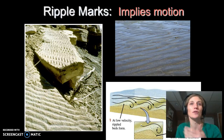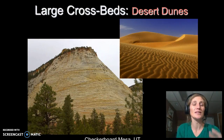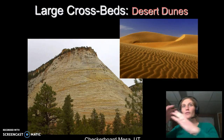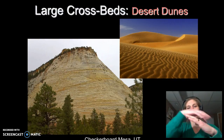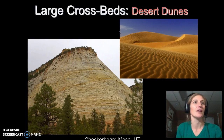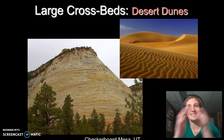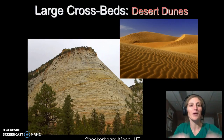Ripple marks tell us that we had some motion of water or wind — they're common in deserts and also in water environments like streams and beaches. Larger versions of ripples are called cross beds, where dunes move across a surface — sand goes up one side and slides down the other, creating bedding we can see. Looking at Checkerboard Mesa in Utah, you can actually see those large cross beds, telling us that sand dunes were once moving across this area. The dunes became buried, compacted, turned into sandstone, and are now preserved.